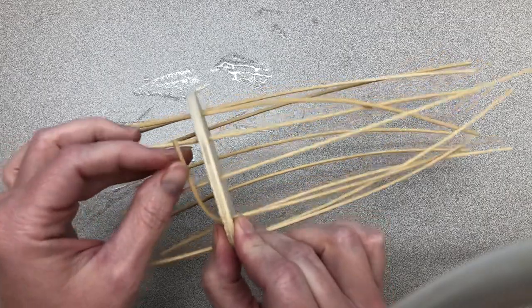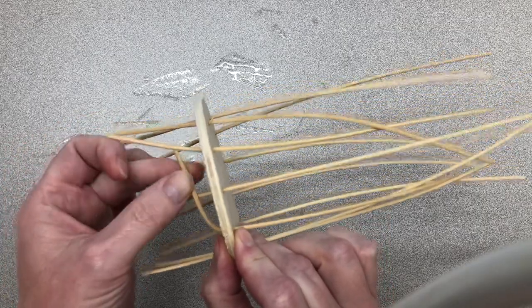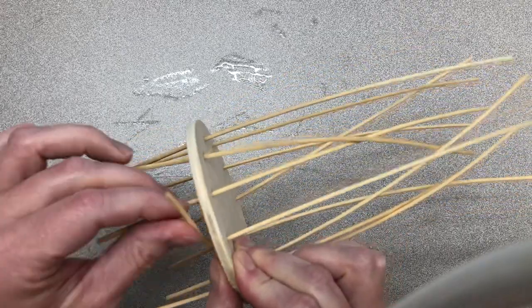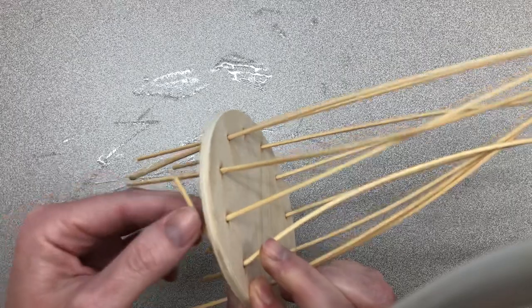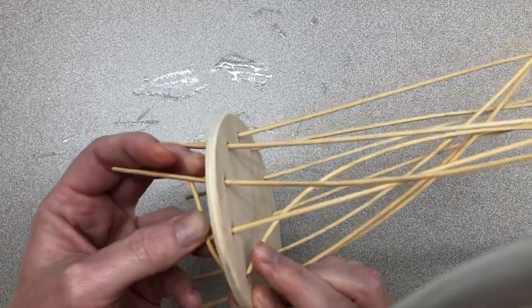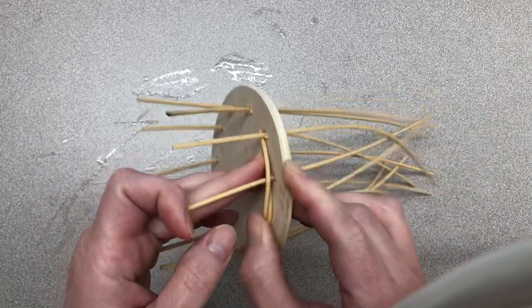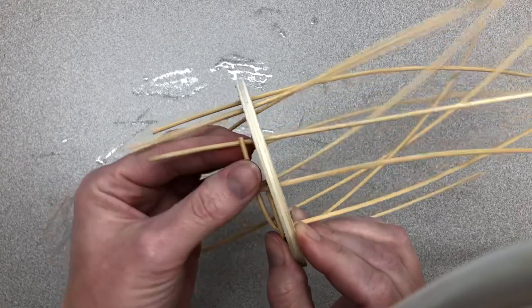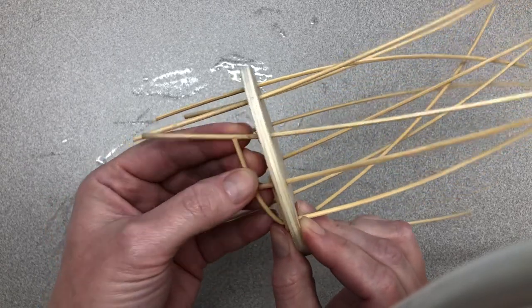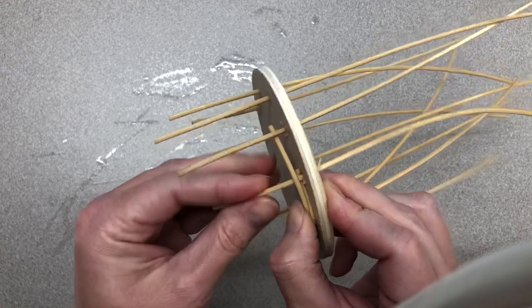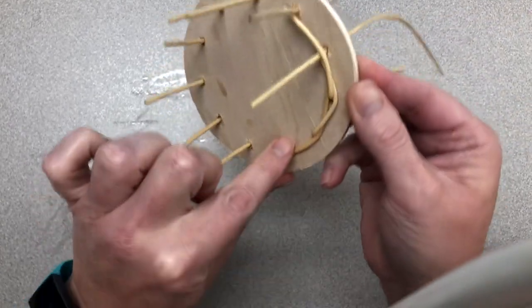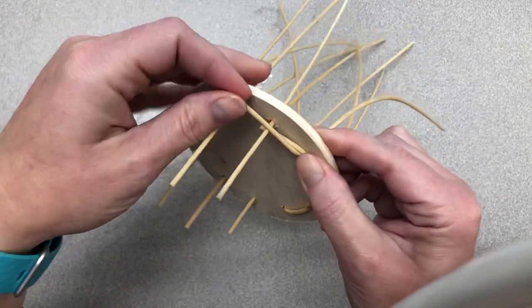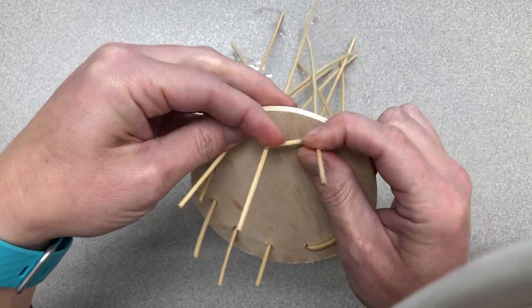And then I take my next one and I weave it around and then behind. And then I take my next one and I weave it around and then behind and I'm going to keep doing this all the way around and you kind of have to hold it as you go. So this is what it looks like on the bottom right now, but I'm going to weave it around and then behind.